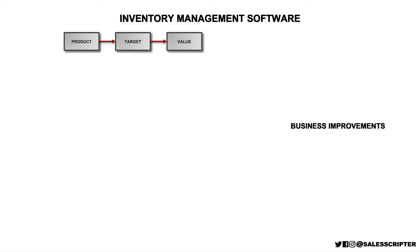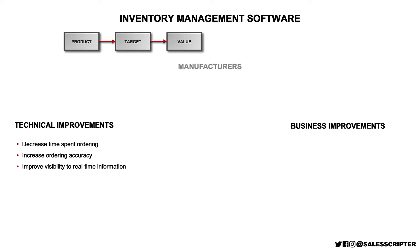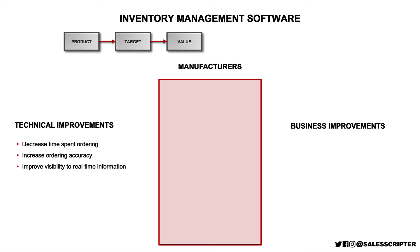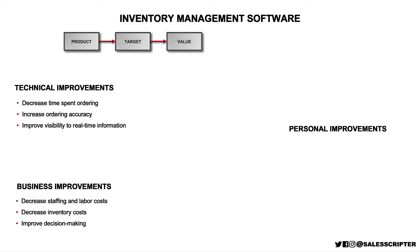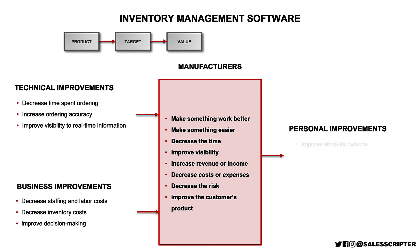And once we have that, we can then brainstorm business improvements that we can deliver. We can bring back the technical improvements that we just came up with and still keeping in mind manufacturers. We can think about: do any of these technical improvements help to increase revenue or income, decrease costs or expenses, decrease risk, or improve the customer's product? Each of these can often lead to a business improvement such as decreasing staffing and labor costs, decrease inventory costs, and improve decision making. And we can use our technical and business improvements to think of personal improvements — such as improved work-life balance, increased recognition and compensation, and improved career trajectory.